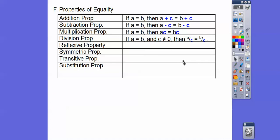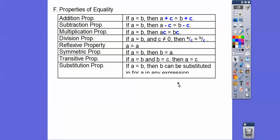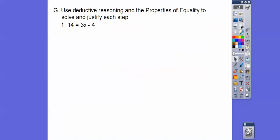The reflexive property says anything equals itself: A equals A, 7 equals 7, 5 equals 5. The symmetric property says we flip things around the equal sign: if A equals B, then B equals A — that's used a lot in proofs. The transitive property says if A equals B and B equals C, then A equals C. The substitution property: if A equals B, then B can be substituted in for A in any expression.